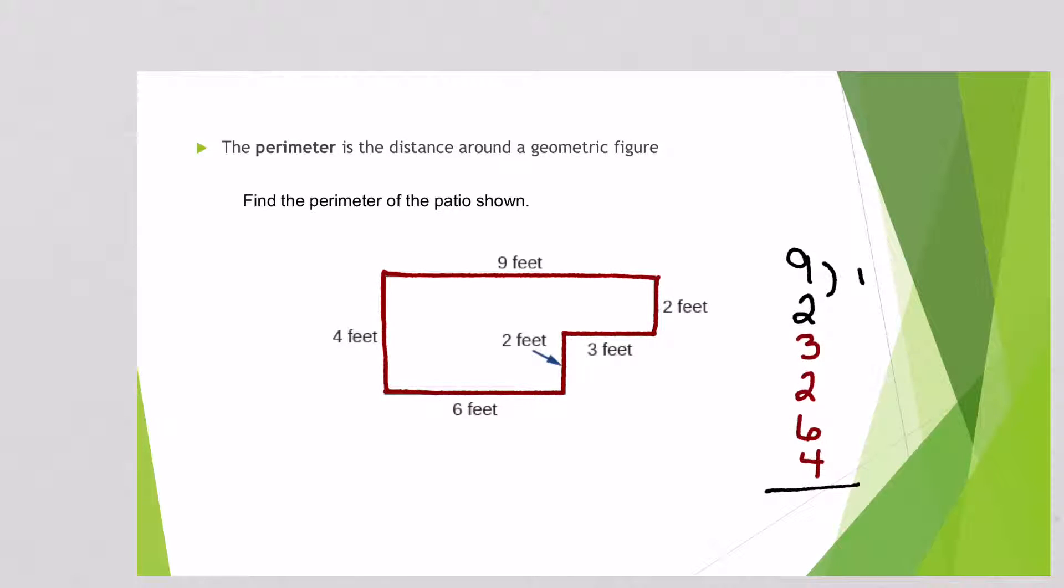So now whenever I go to add all these guys up, 9 plus 2 is 11, 11 plus 3 is 14, 14 plus 2 is 16, 16 plus 6 is 22, 22 plus 4 is 26. So it looks like this figure has a perimeter of 26, always label it, 26 feet.